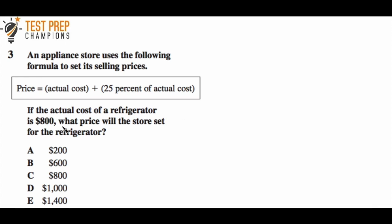To get this question right, we're trying to find the price the store will set for the refrigerator. Looking at the equation, we're finding the price. They tell us the actual cost is $800, so we substitute that into the formula wherever we see actual cost. Let's rewrite this formula.